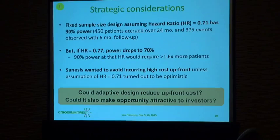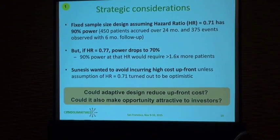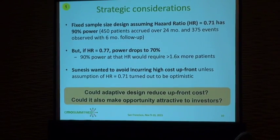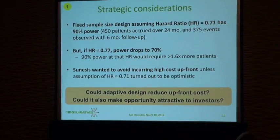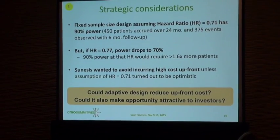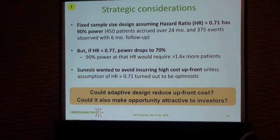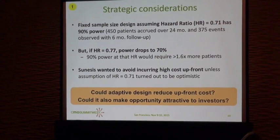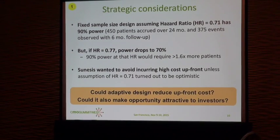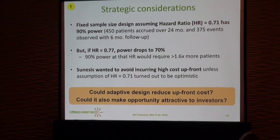The traditional design had sufficient power with enough sample size. They expected a hazard ratio of 0.71, and for 90% power it was 450 patients with 375 observed events. That was fine, except they had a feeling that perhaps they were being optimistic, and maybe the hazard ratio would not be quite so good. What happens then? The power drops quite a bit to 70%, and to get 90% power you'd have to increase the sample size by 60%, which seemed financially out of their reach.